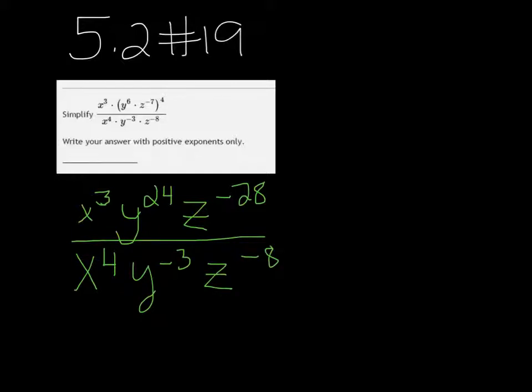Now we're ready to use the quotient rule. It says that if you're going to divide like bases, you're going to subtract their exponents. If it's positive, the term stays in the numerator. If it's negative, it's going to go in the denominator.